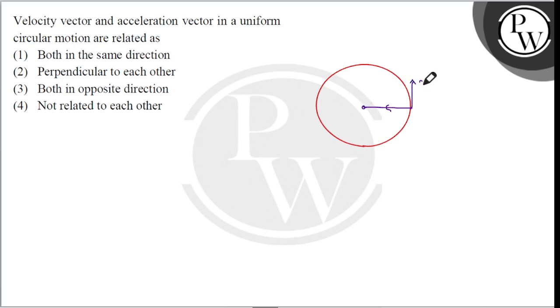And it will be a velocity vector. If you have a point A and point B, then the centripetal acceleration is directed here.